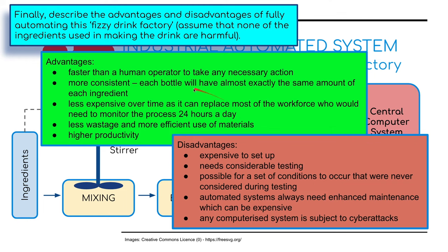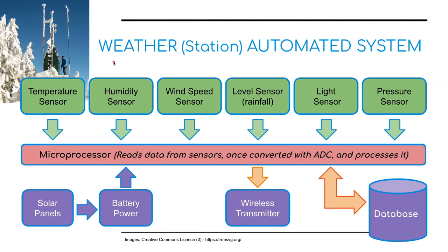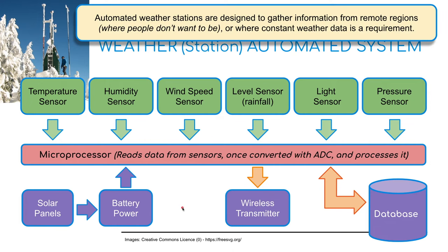These advantages and disadvantages apply to all of the automated systems we're going to be covering. Finally, we're going to move on to weather and a weather station — a completely remote area, maybe in the North Pole, where automated weather stations are designed to gather information from remote regions where people don't really want to be, or where constant weather data is required.